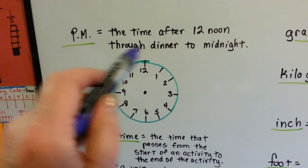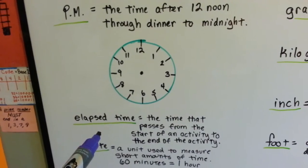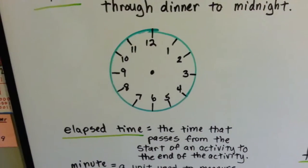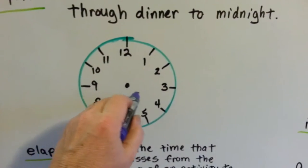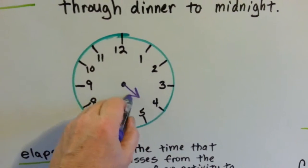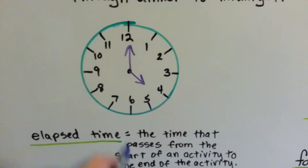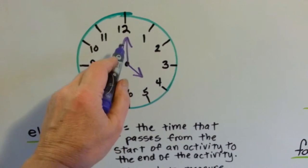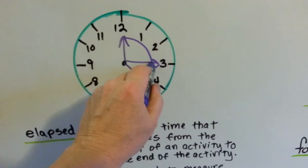This is the clock. Elapsed time means the time that passes from the start of an activity to the end of an activity. So if something started at 4 p.m. and 15 minutes went by, where would the hand of the clock go? See? The hand of the clock would move from here to here, and this would be the elapsed time.